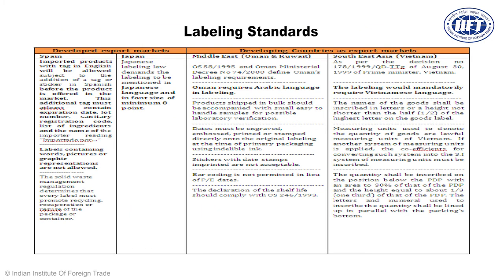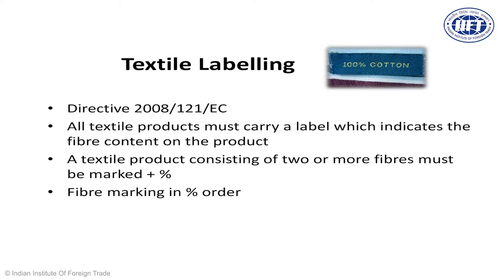Now, labeling standards. When you visit the GAIN report, it's very instructive. For example, the Spanish market is very typical in labeling standards — they are very particular about product stickers being in the Spanish language, and the tag must have an expiry date, a lot number, and a sanitary code. Something very typical of the Spanish market is that labels containing words, pictures, or graphic representations are not allowed. For textile products, you have to be very cautious about Directive 2008/121, which states that all textile products must carry a label indicating the fiber content. That is why you see 'Made in India' giving a country of origin tag and '100% cotton.' The percentage breakdown must be marked properly — 80% cotton, 5% this, 10% that — in a sequential order.